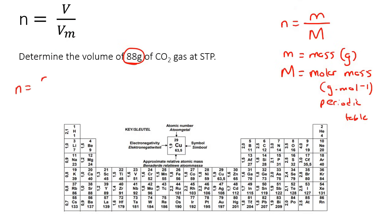So we could say n is equal to m over capital M, and so that'll be equal to 88 over... now to work out the mass of CO2 on the periodic table...